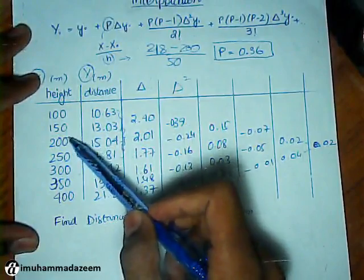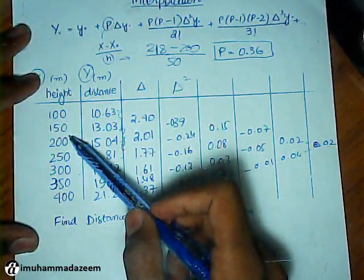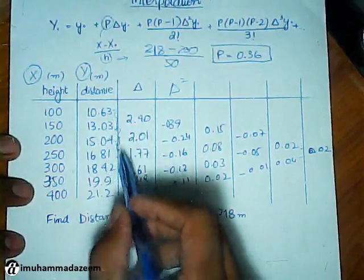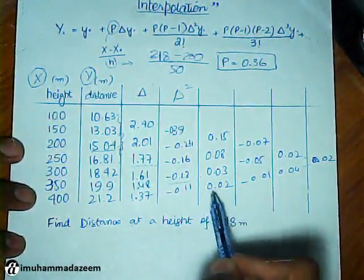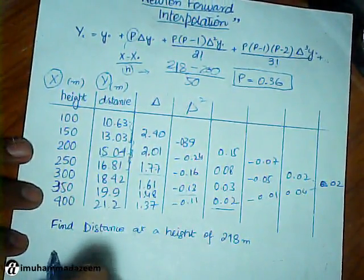What we are going to find at 218 is going to lie somewhere here. The forward interpolation goes in this way. We first find here, here, here, here, and here finally. Now it's time to put the values in the formula.